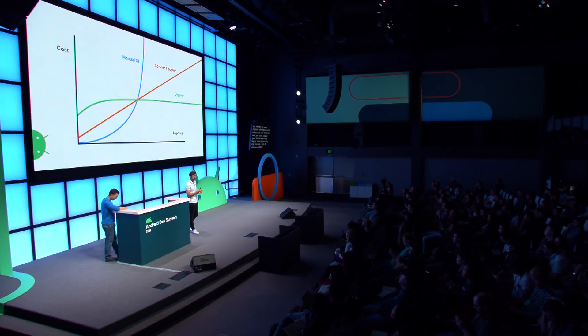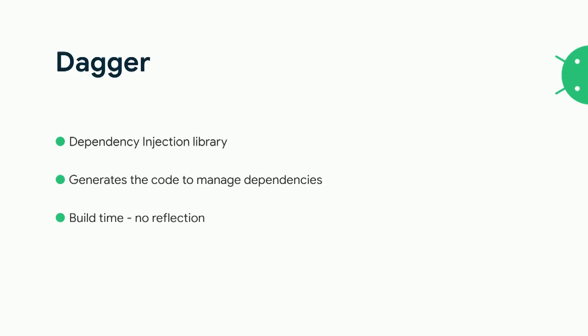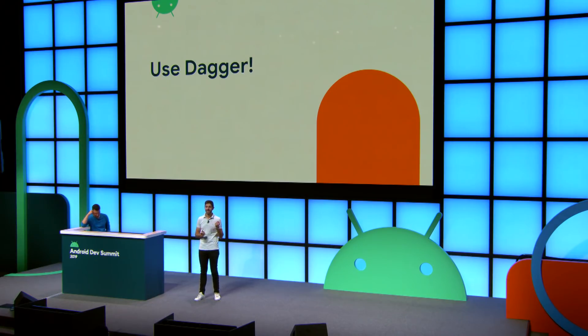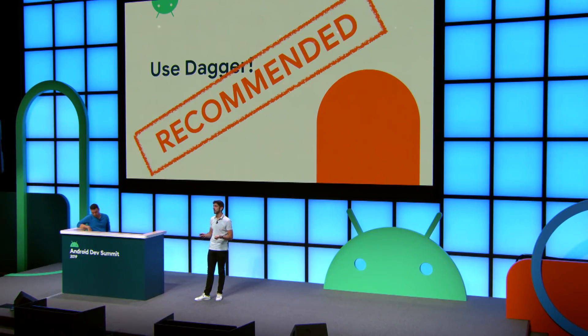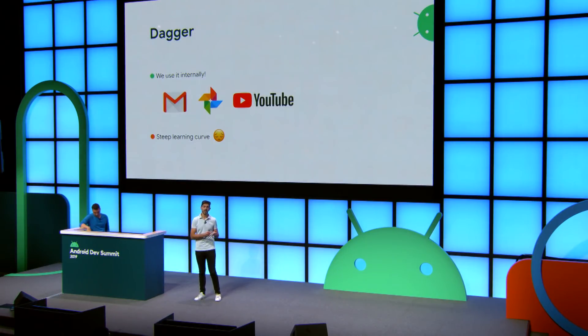For those who don't know what Dagger is — Dagger is a dependency injection library that helps you manage dependencies. It generates the code that you would have written by hand otherwise, and that generation happens at build time. So it is performant and safe to use in production — you avoid those runtime surprises and it provides correctness at build time. Dagger doesn't do reflection. Even though reflection got faster in Android over the years, not using reflection is even better. We want you to use Dagger. It's our recommended tool and we think it's the best framework out there for dependency injection because of its correctness, performance, and scalability. We use it in production in apps like Gmail, Photos, and YouTube — you can see how big those applications are and how much they can scale.